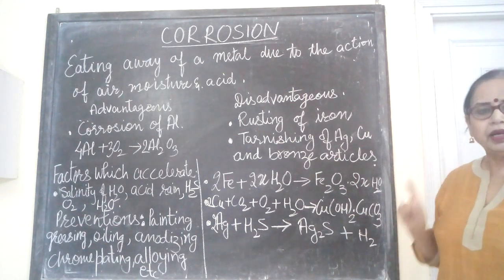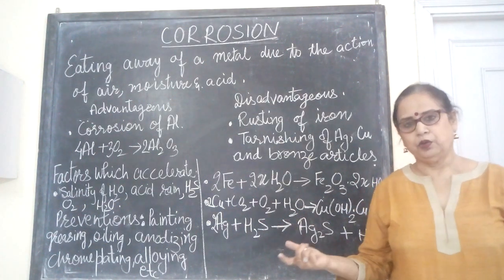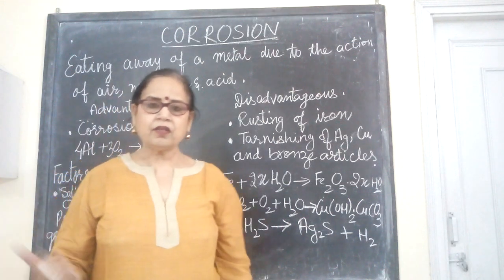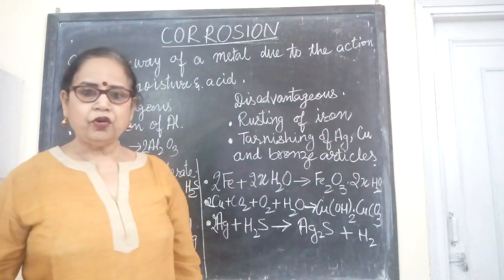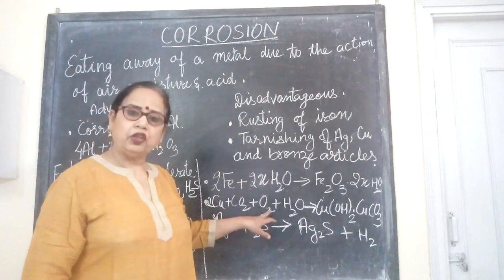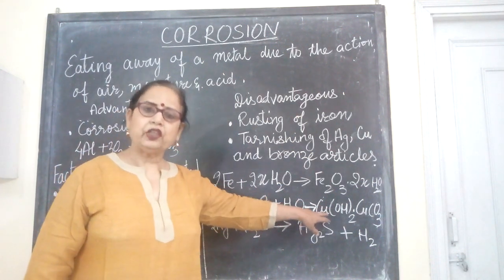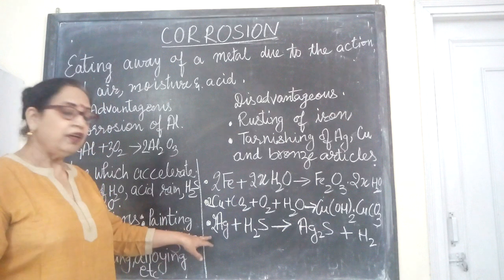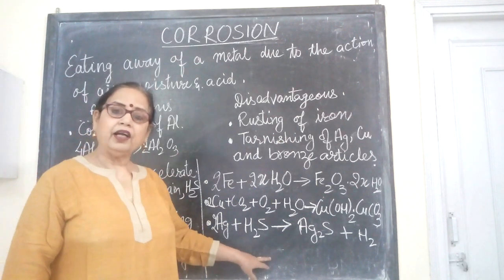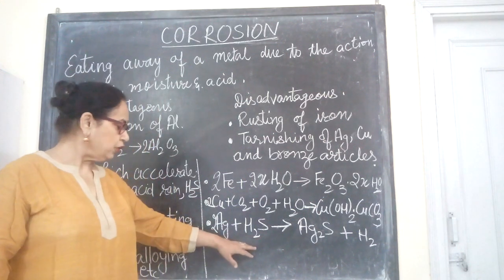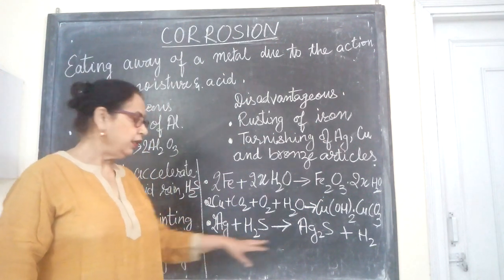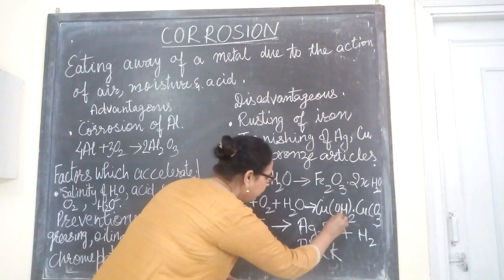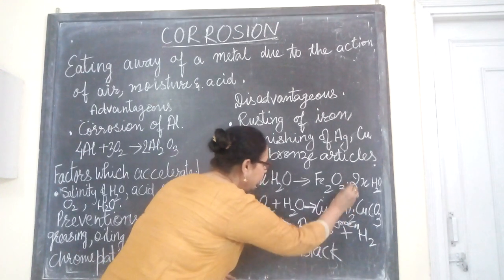This greenish surface of copper is due to the formation of basic copper carbonate, which is a combination of copper hydroxide and copper carbonate. The greenish coating seen on bronze statues in museums and copper utensils stored for a long time is due to corrosion of copper leading to basic copper carbonate on its surface. Silver is tarnished by hydrogen sulfide, which converts silver into black silver sulfide.